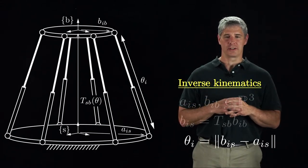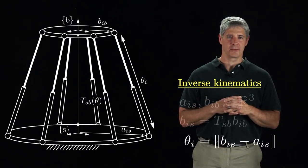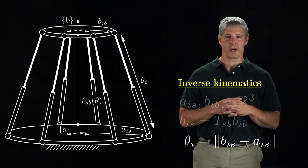Inverse kinematics is easy for the Stewart platform. If the legs of the parallel robot are more general open chains, then we have to solve an inverse kinematics problem for each leg.